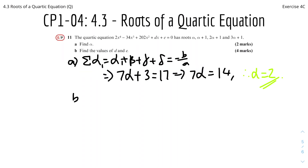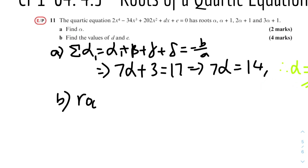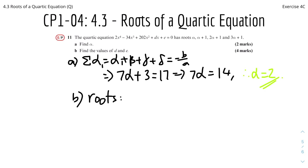Part b: find the values of d and e. It's helpful to first find all the roots. With alpha = 2: root 1 is 2, root 2 is alpha+1 = 3, root 3 is 2alpha+1 = 5, and root 4 is 3alpha+1 = 7. So the roots are 2, 3, 5, 7.